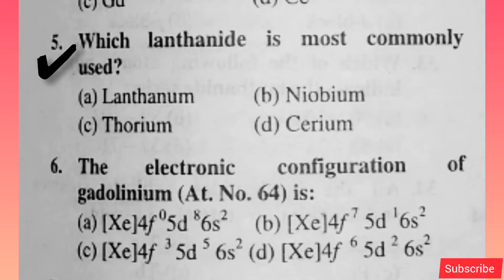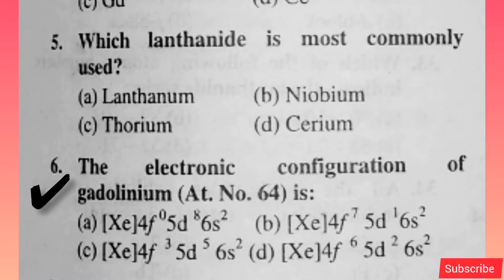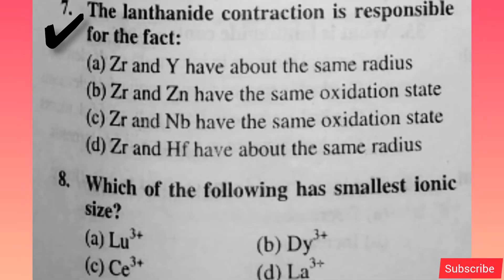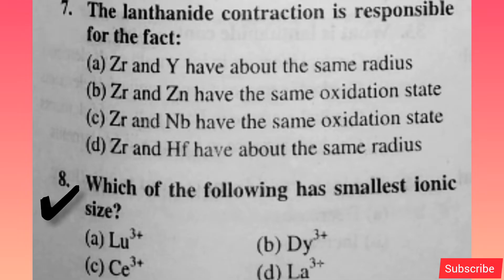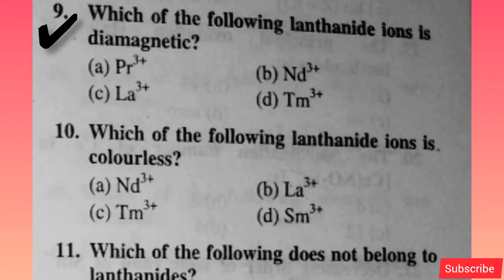Which lanthanide is most commonly used? Option D is correct. The electronic configuration of gadolinium (atomic number 64) is — option B is correct. The lanthanide contraction is responsible for the fact — option D is correct.